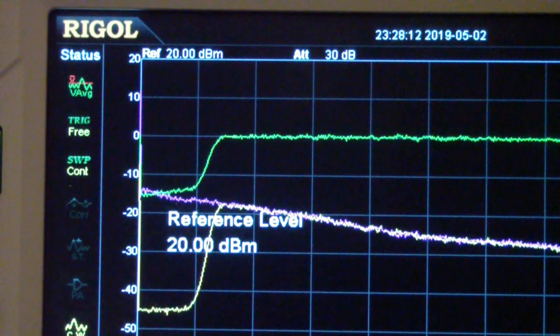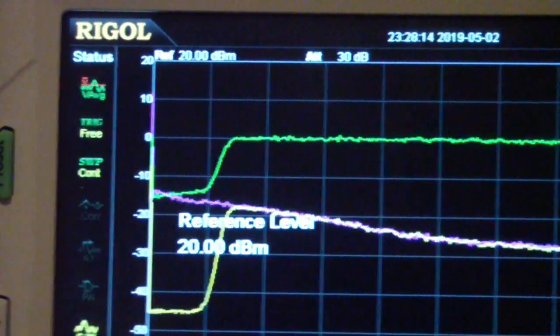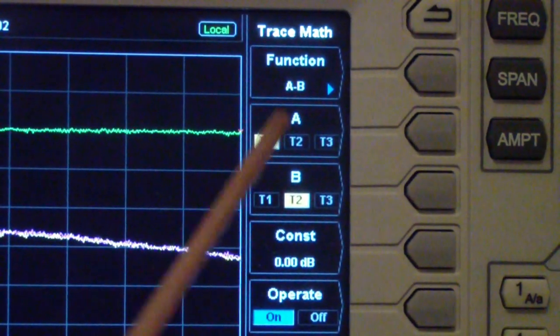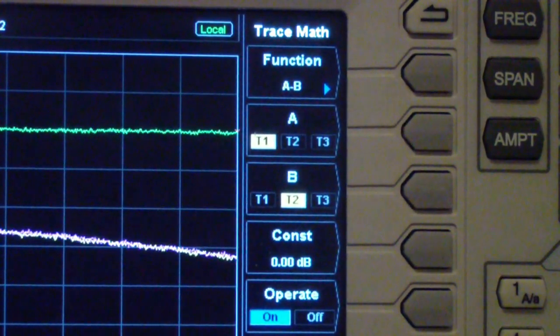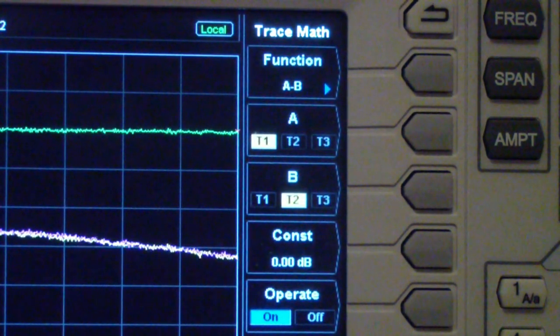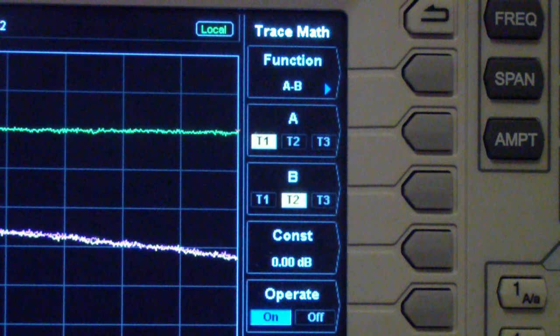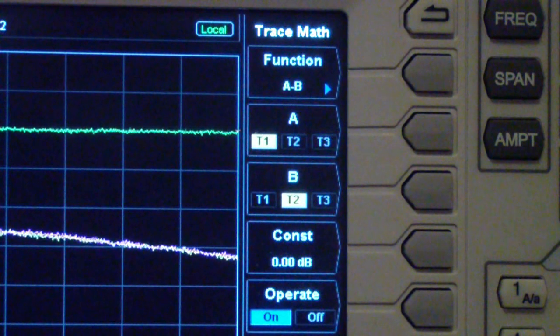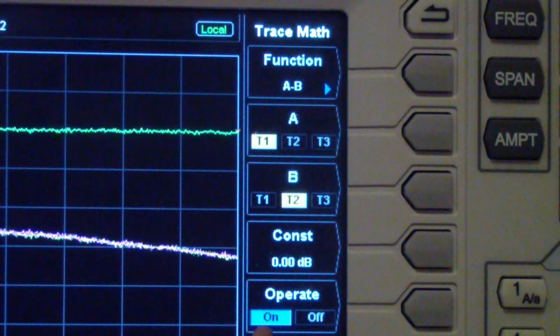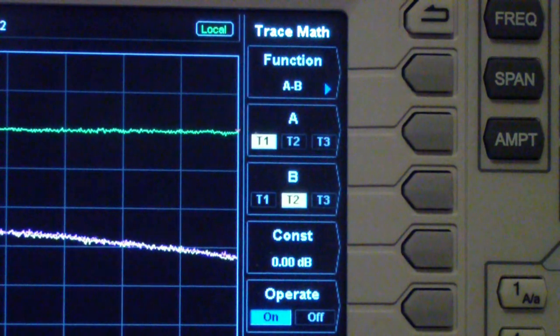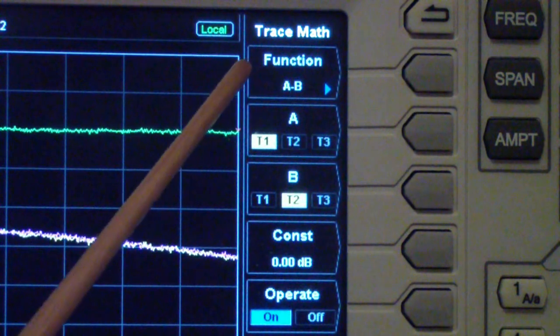So in other words, what we're doing is using the trace math function. And notice trace 1, that is the yellow trace, is trace A. Trace B, that is the purple trace, is trace 2. And then I have operate turned on, and what operate does is it applies this function and displays a third trace that is the function.